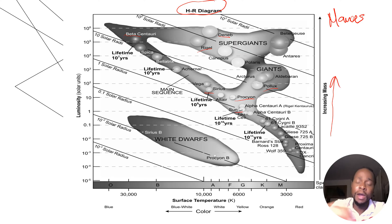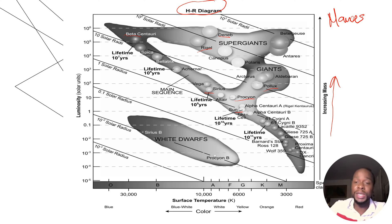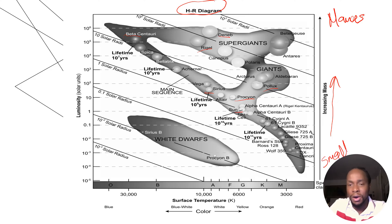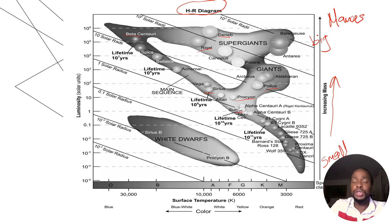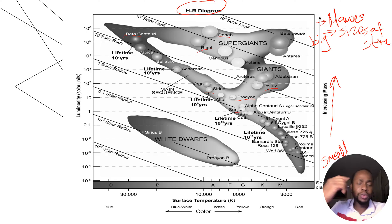The next thing this page will also provide you with is the mass or the size of various stars. To the right side of this chart you will see increasing mass, so at the bottom would be small mass stars and all the way on top would be sizes that are humongous. This reference table page also tells you about the sizes of stars.